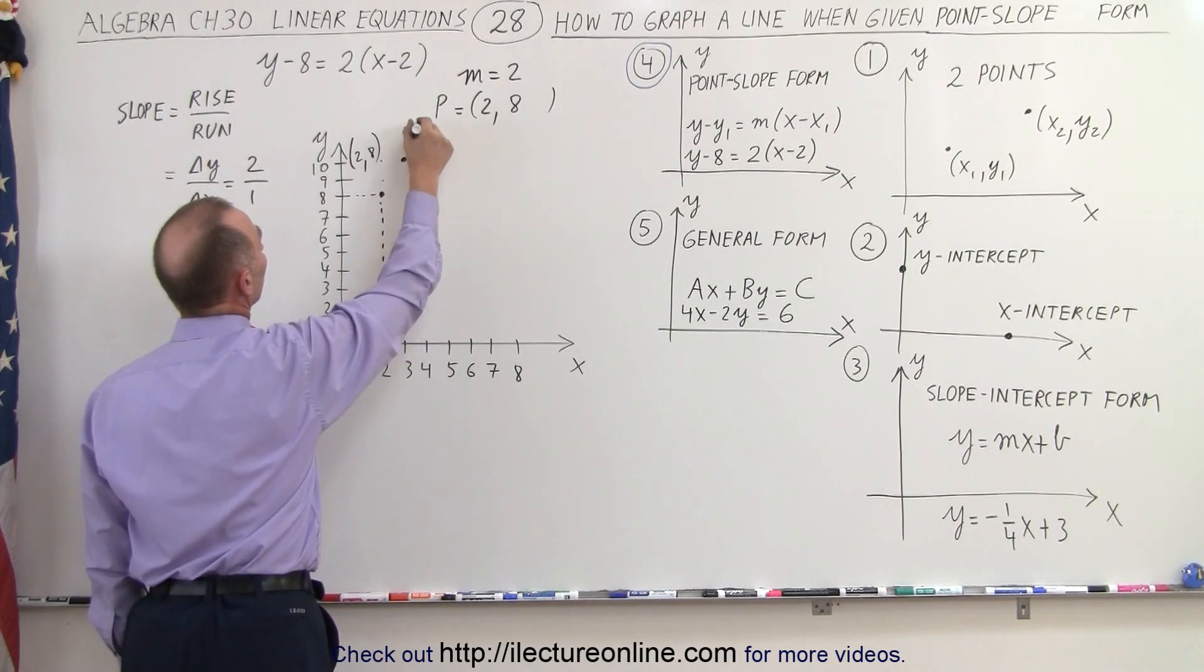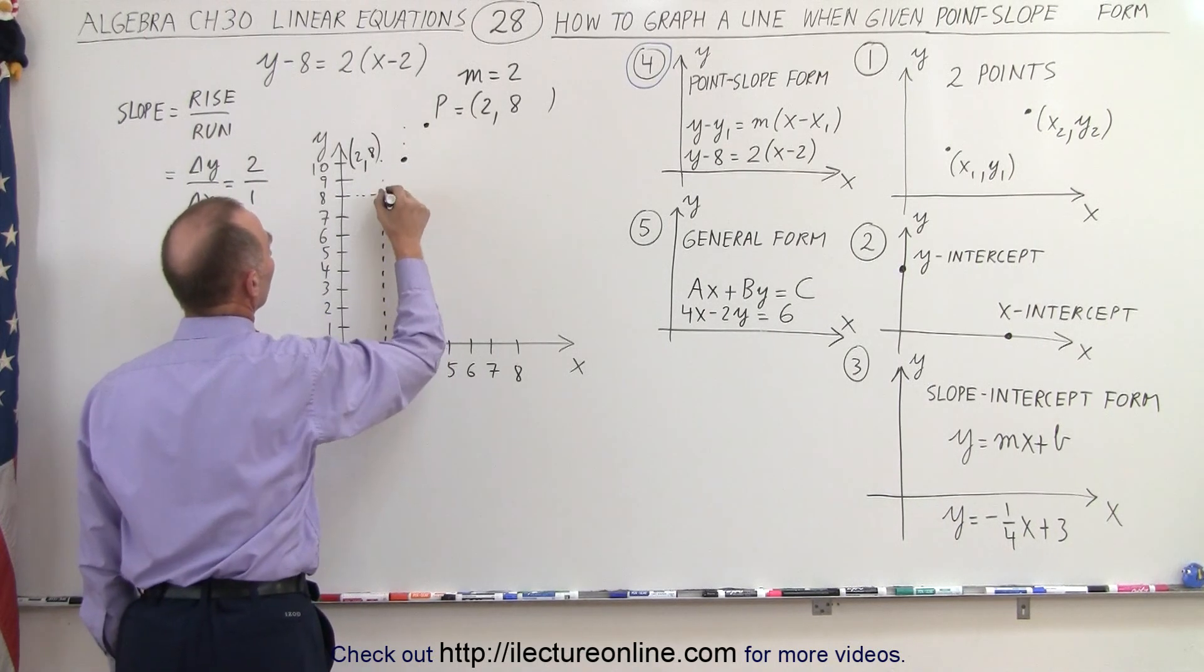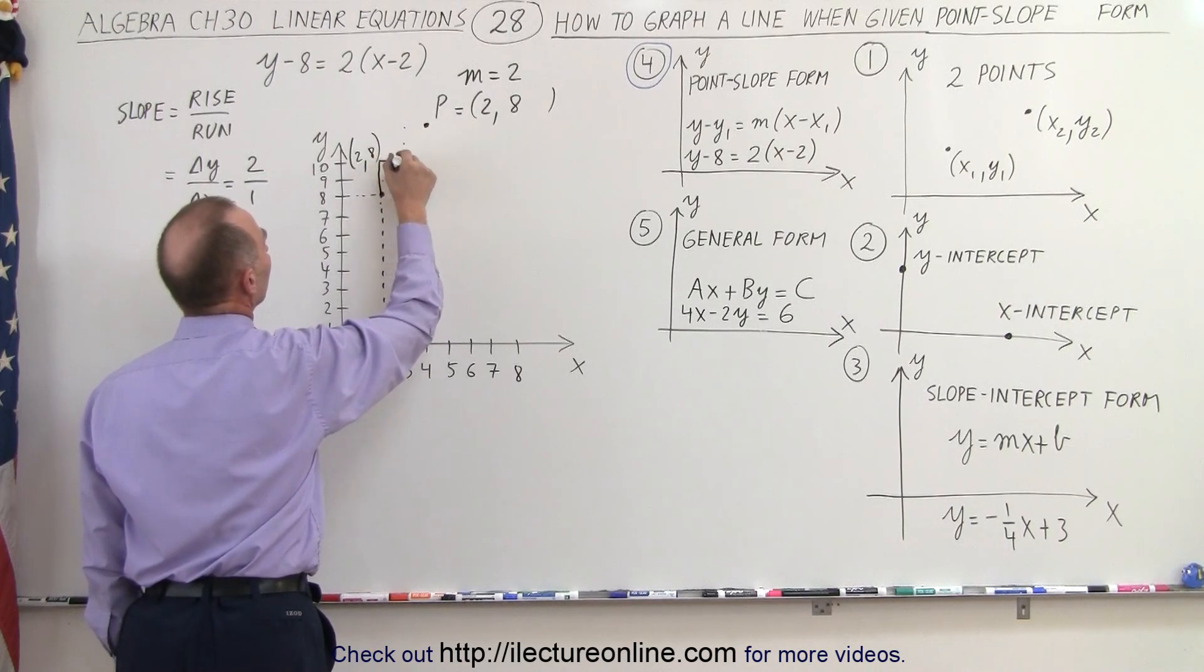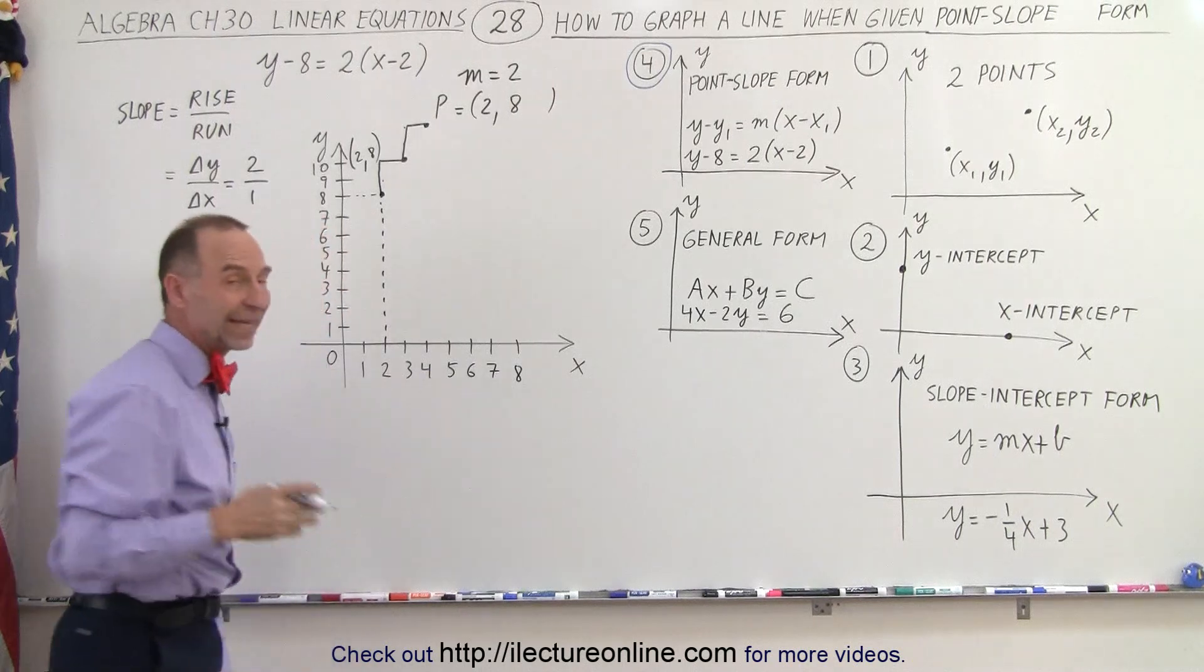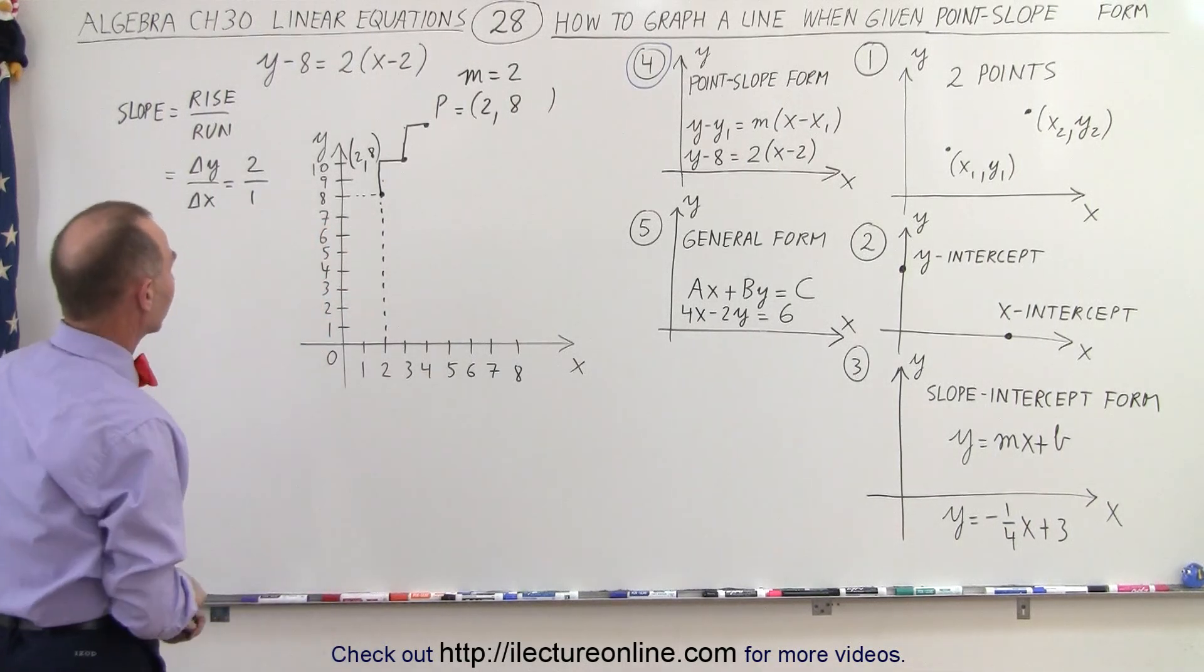Then we can do it again. Go up 2 and over 1, there's another point. So notice, we go up 2 and over 1, up 2 and over 1, and that's how we have the three points when we connect them that lie exactly on the line.